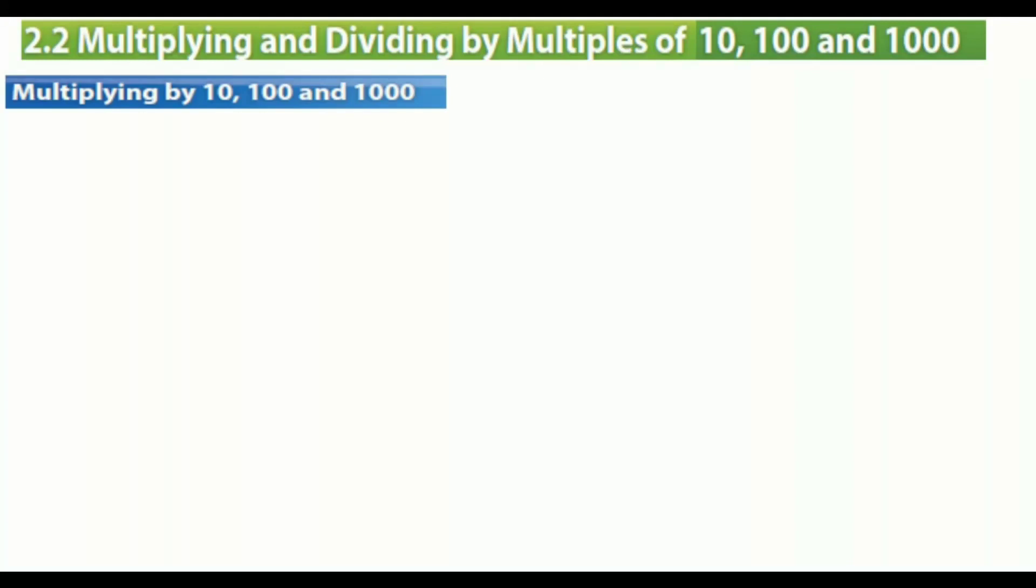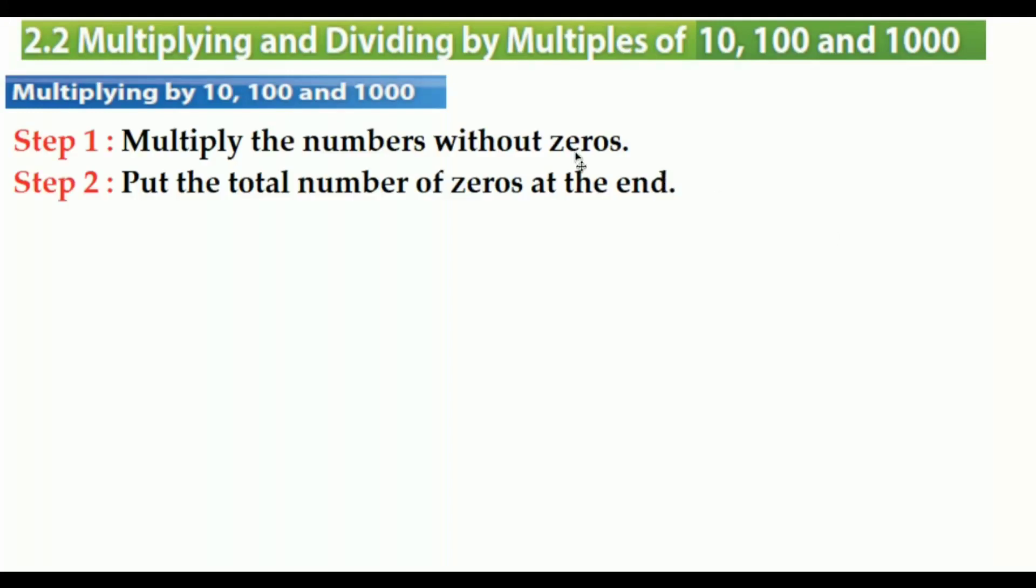We have a very easy way, a very short way to understand and solve any question by multiplying by 10, 100, and 1000. Let's see the rule. We have two steps. First, you have to multiply the numbers without zeros. Then you have to put the total number of zeros at the end.